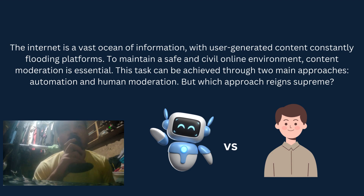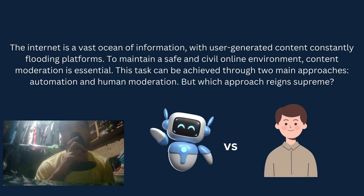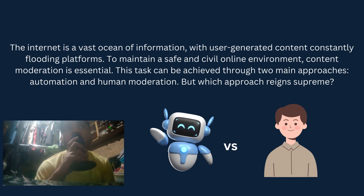Today I'll be discussing the differences and the pros and cons of AI moderation versus human moderation, which deals with content moderation or monitoring violating posts or pictures on a platform or social media platform. As we all know, the internet is a huge ocean of information, with users generating content to lure people into their websites or discuss in open communication with other people, constantly flooding social media platforms. To maintain a safe and civil online environment, content moderation is essential.